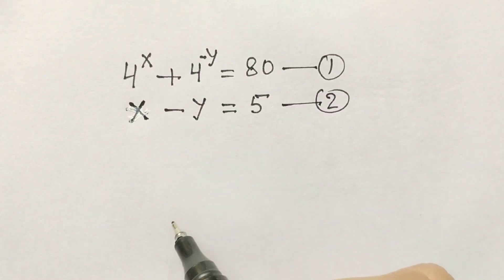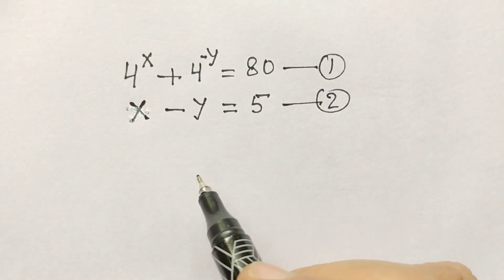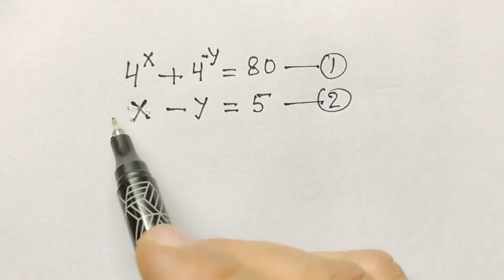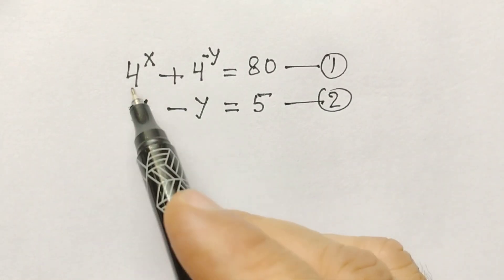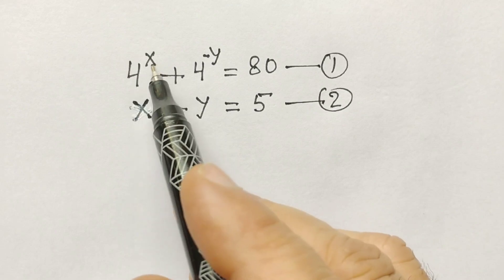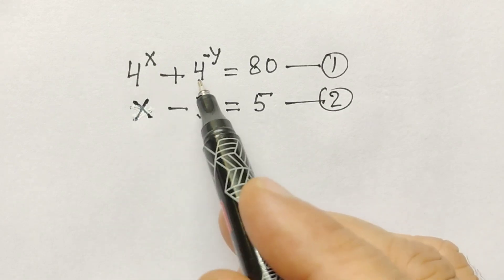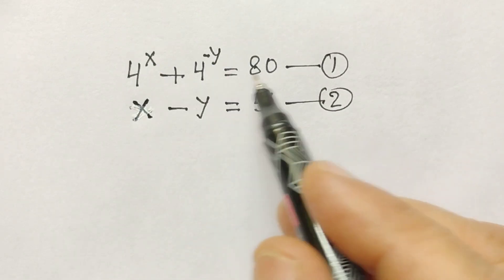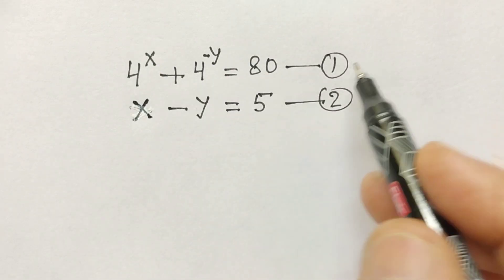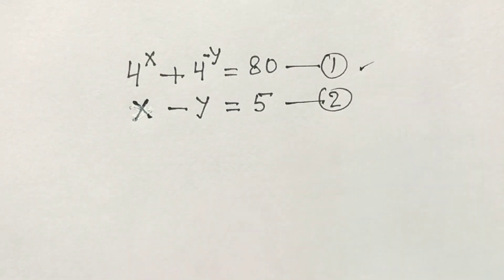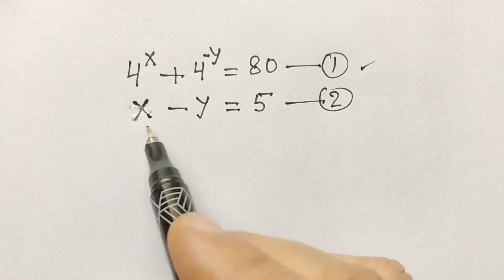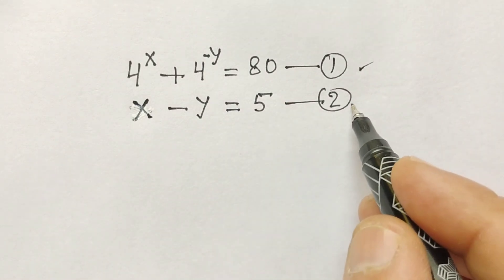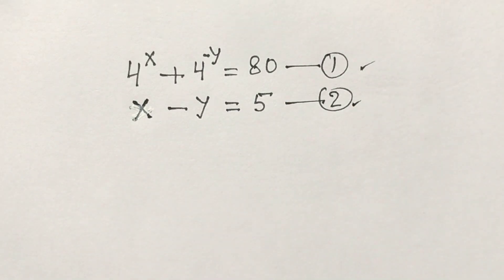Hi friends, welcome back to my channel. Today we have awesome equations. 4 to the power x plus 4 to the power minus y is equal to 80 — equation first. x minus y is equal to 5 — equation second.